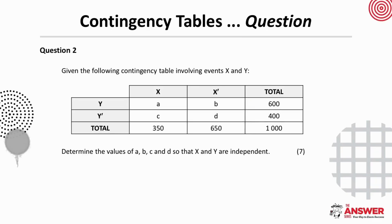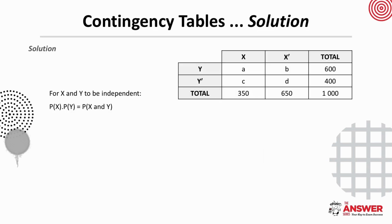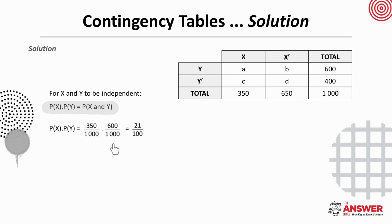For question 2.2, you are given a table with unknown values and asked to determine them given that X and Y are independent. Pause the video here to see if you can find these unknown values. We start by remembering what is true for independent events. Let's first find the product of the individual probabilities. The probability of X is 350 over 1000, and the probability of Y is 600 over 1000, and their product is therefore 21 over 100.